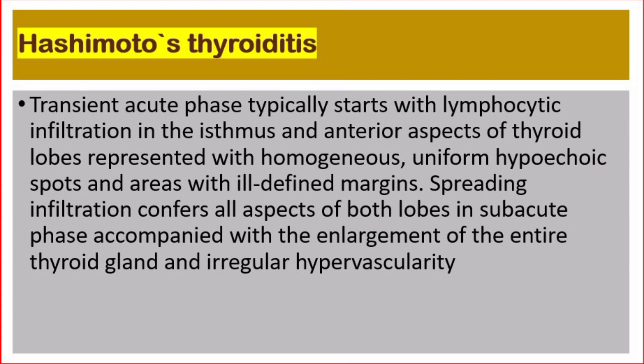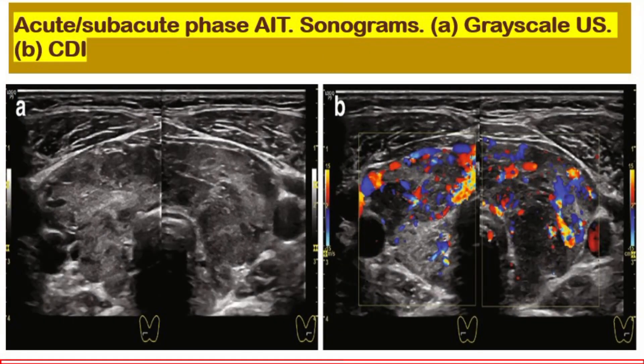The transient acute phase typically starts with lymphocytic infiltration in the isthmus and anterior aspects of thyroid lobes, represented with hypoechoic spots and areas with ill-defined margins. Spreading infiltration covers all aspects of both lobes in the sub-acute phase, accompanied with enlargement of the entire thyroid gland and irregular hypervascularity.